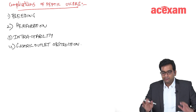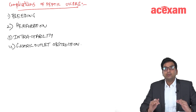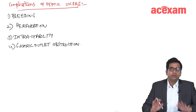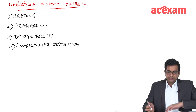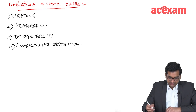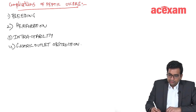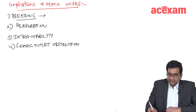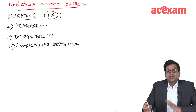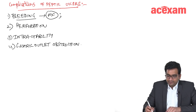The heading is: what are all the complications of peptic ulcers as a whole? The most important and most common complication is bleeding.